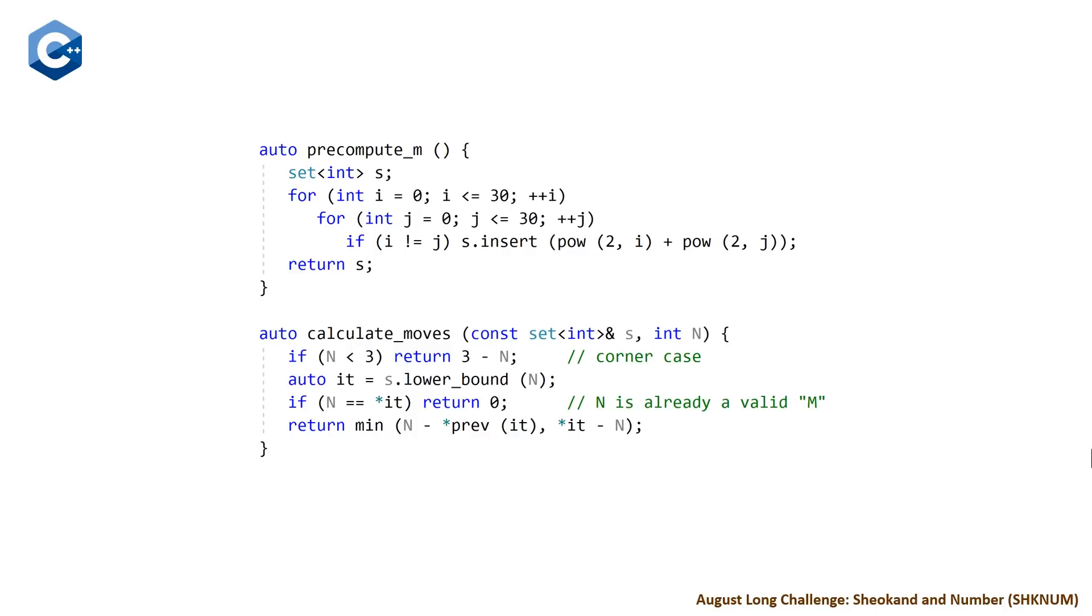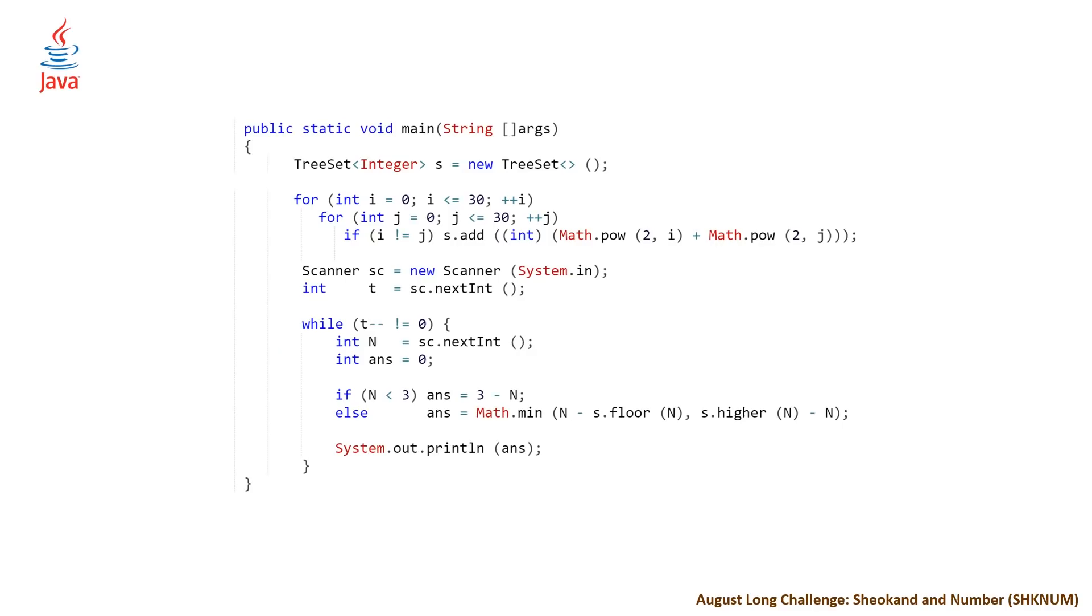That's the C++ solution. Looking at the Java solution, somewhat similar, but we don't have everything broken up into functions because Java passes by value, you can't pass by reference. So it'll be less efficient if we set up functions. Here we have a tree set in Java, and the same nested for loop. Instead of inserting, we call the method add. Then we read in t and n for each test case, making sure to catch our corner case.